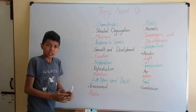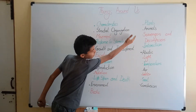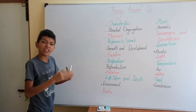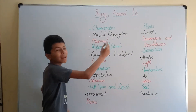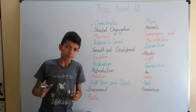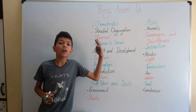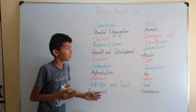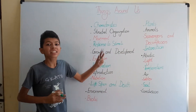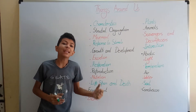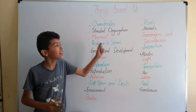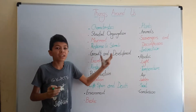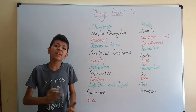Biotic means all living things, which include plants, animals, scavengers, and decomposers. Plants make their own food using the process of photosynthesis. Animals take food already produced by plants, so they are called heterotrophs. Scavengers are animals that feed on the remains or dead parts of animals. Decomposers are tiny organisms that feed on the remains of dead animals and convert them into simpler substances that mix back into the soil.